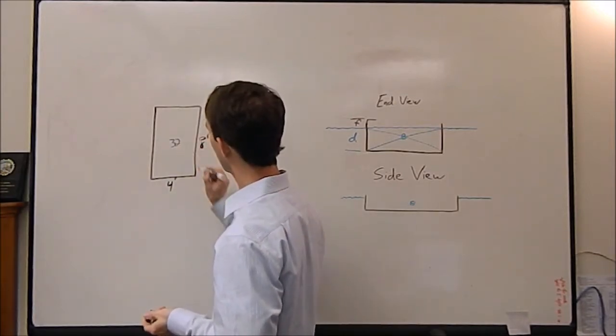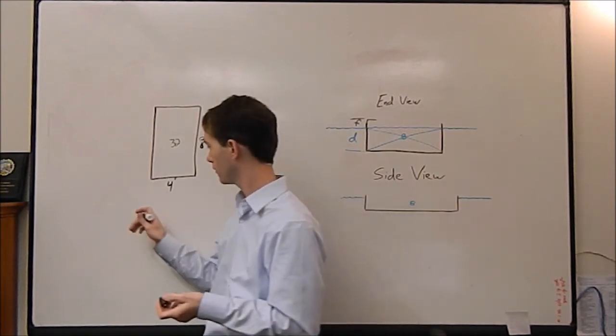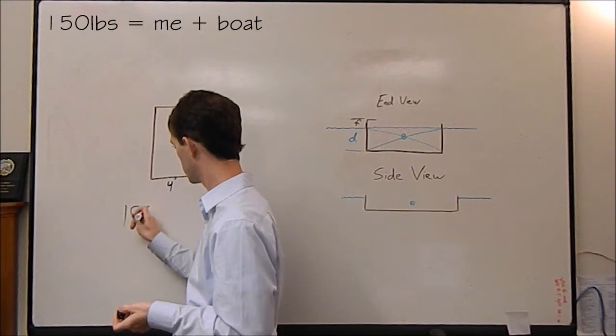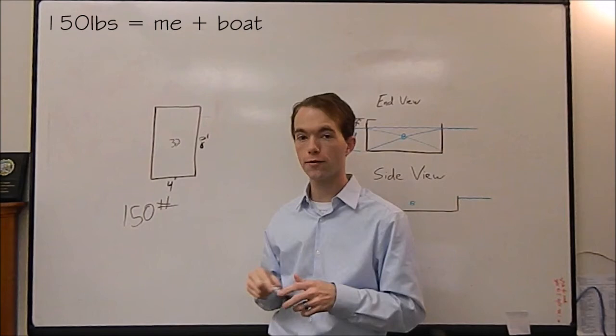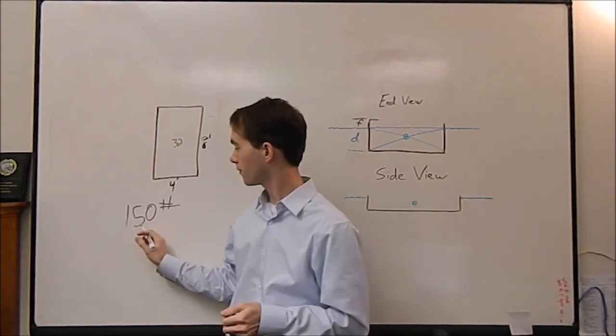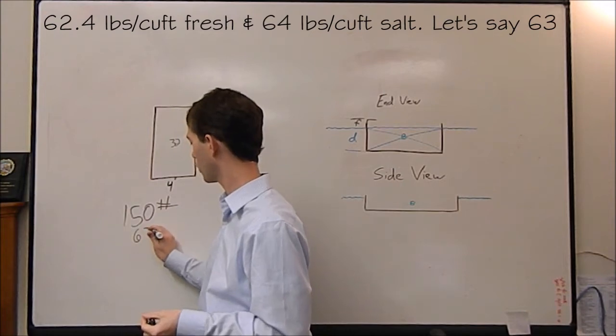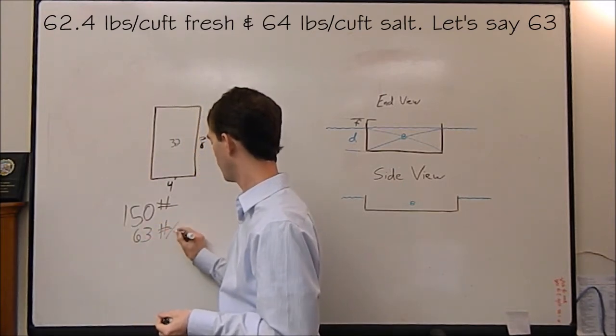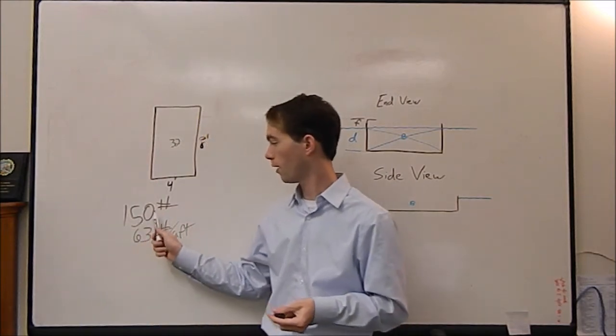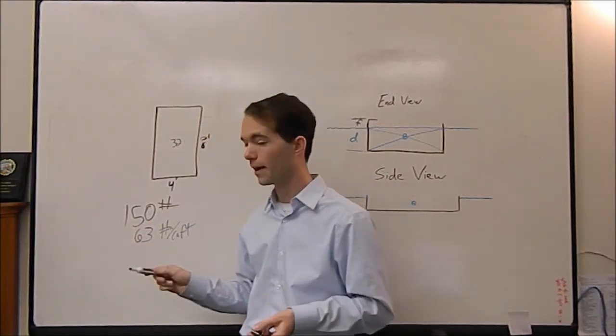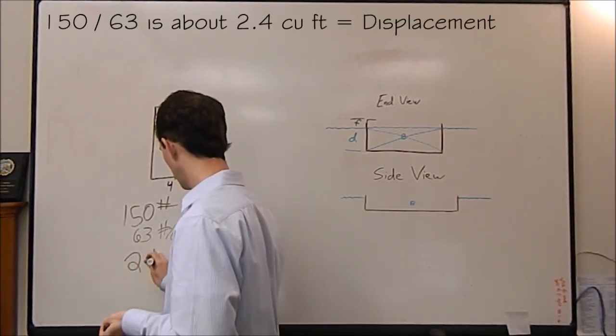So if we have 32 square feet, going back to the example I provided earlier of 150 pounds, we can calculate real quickly what our draft should be. We know that water, fresh water in this case is 62.4 pounds. We're going to call it 63 pounds per cubic foot. So we know this, we know this, we simply divide that out and remember it was 2.4 cubic feet.